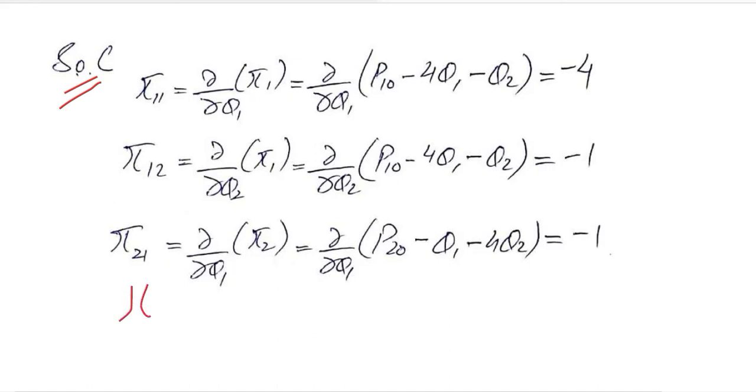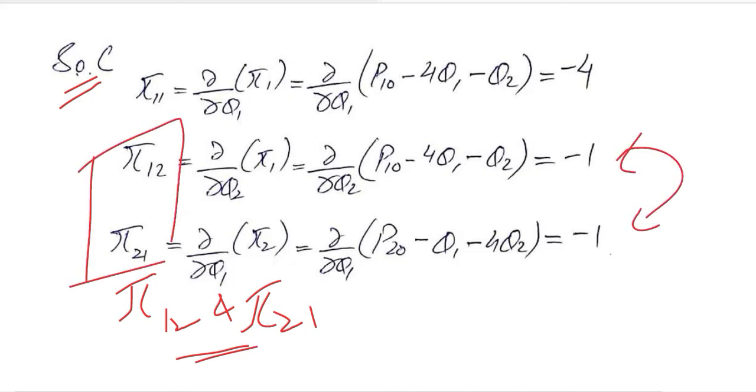I am saying three because π₁₂ and π₂₁ are equal, but still we can find all four of them. Both of them are calculated though they have the same answer under the Young's theorem.